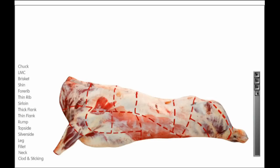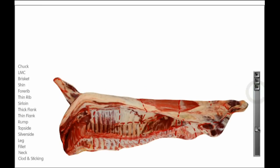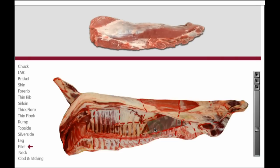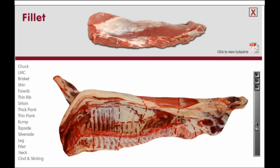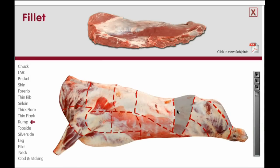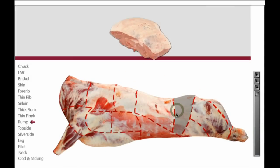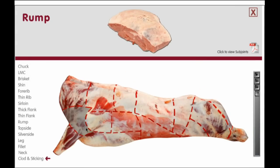If we just spin it around — look, there's where the fillet comes from; that's always hard to see. The model comes out here, you can see the actual joint, and then you can click here and go to a PDF which shows all the sub-joints of that fillet. That is the same if you click on the rump or any of the other joints.